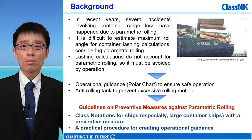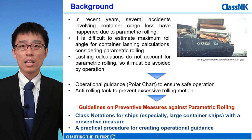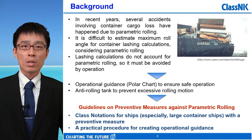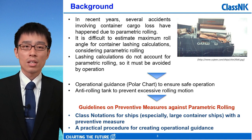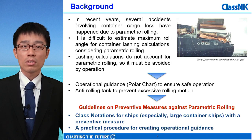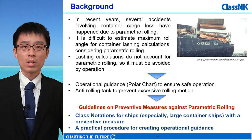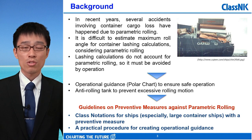To reduce the risk of parametric rolling and ensure the safety of crews and cargoes, there are some measures. Operational guidance in the form of a polar chart is one of the effective tools to avoid a dangerous sea state where parametric rolling is likely to occur. Another approach is the equipment of anti-rolling tanks to prevent excessive rolling motion. In order to support the installation and operation of these software or hardware tools, we published guidelines on preventing measures against parametric rolling in February this year. This guideline is intended to give a class notation for ships with preventive measures and recommend a practical procedure for preparing operational guidance in the form of a polar chart.